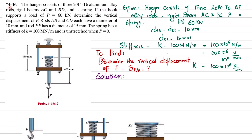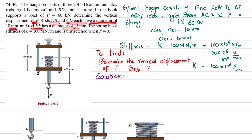Welcome back. Problem 4-16. The hanger consists of a 2014-T6 aluminum alloy rod, rigid beams AC and BD, and a spring. If the hook supports a load of 60 kilonewtons, determine the vertical displacement of F. Rods AB and CD have a diameter of 10 millimeters, rod EF has a diameter of 15 millimeters, and the spring has a stiffness of k = 100 MN/m, unstretched when P = 0.